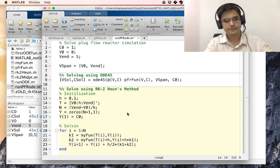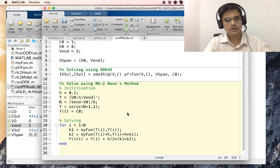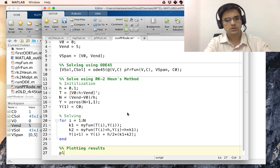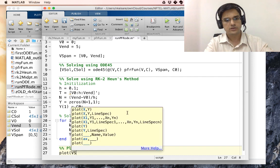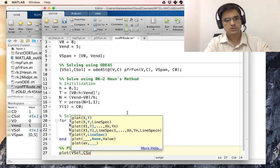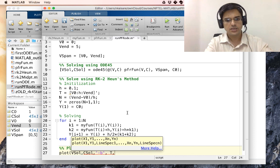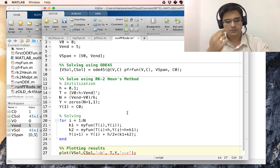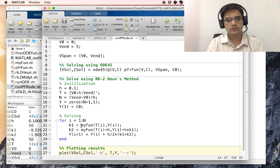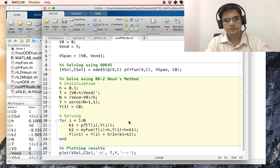Let us say initialization, solving, and plotting results. Plot V solve comma C solve as blue line and T comma Y as dashed red line. And the other thing that we need to do is replace this with an appropriate function, PFR fun.